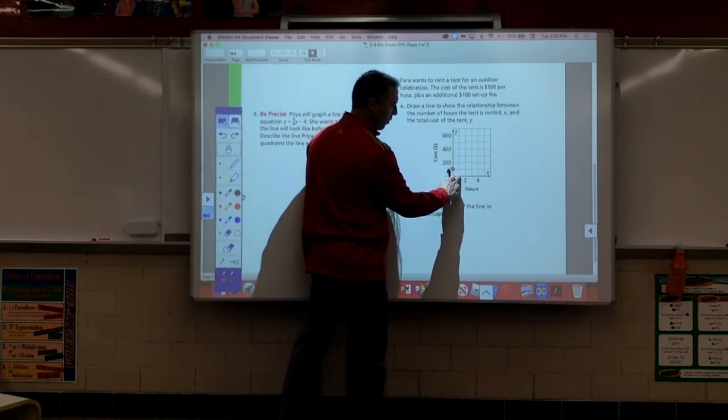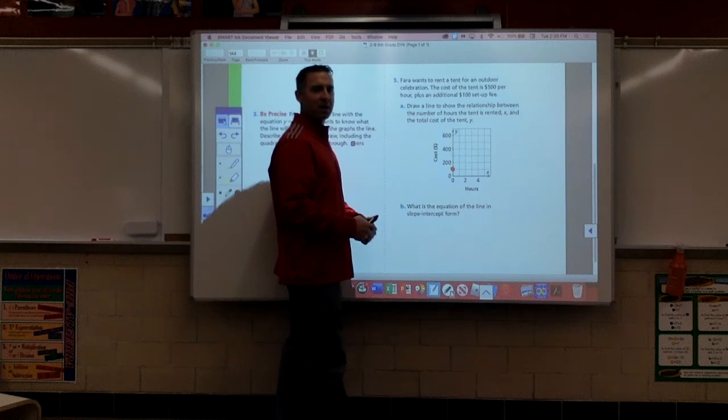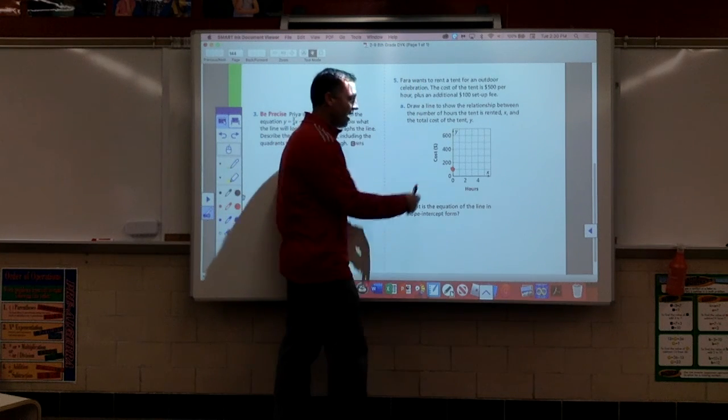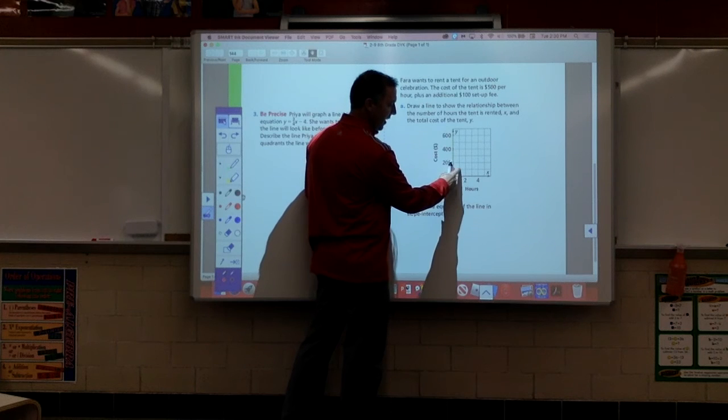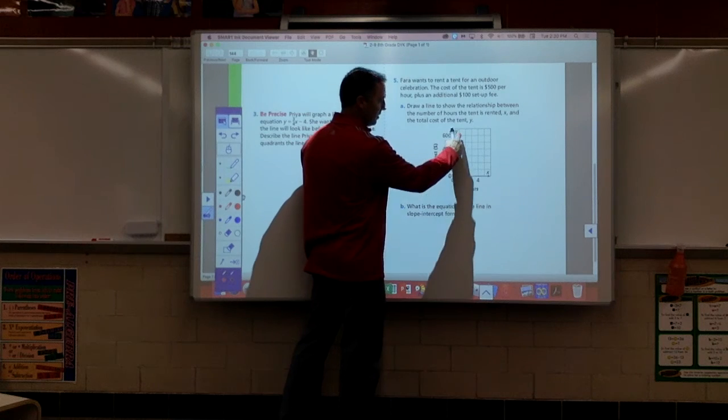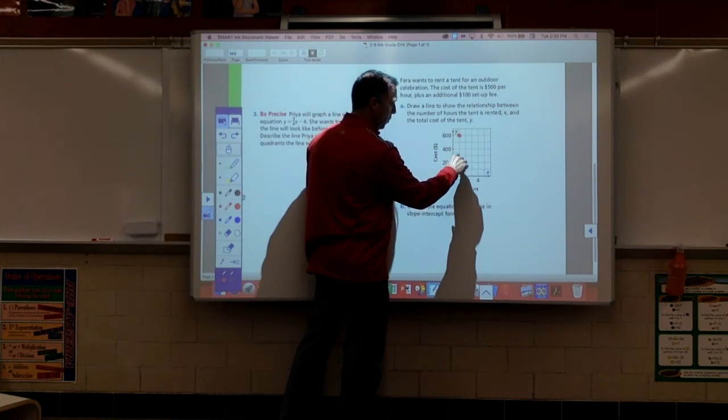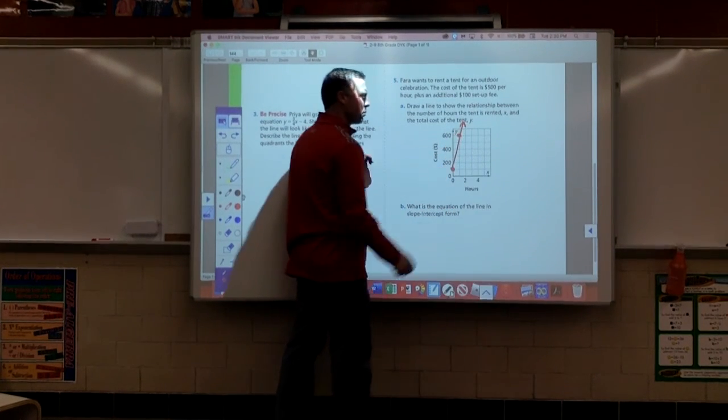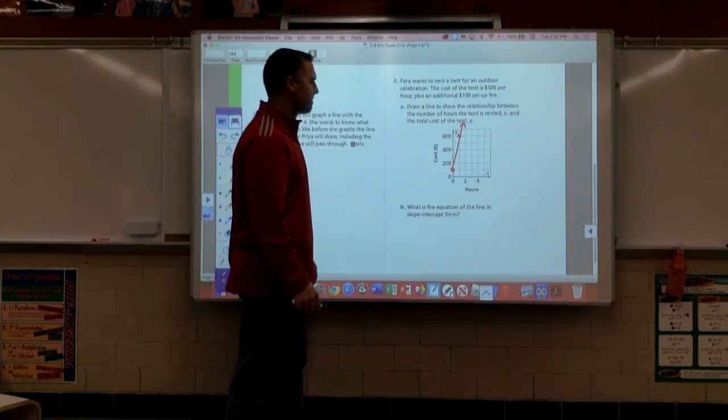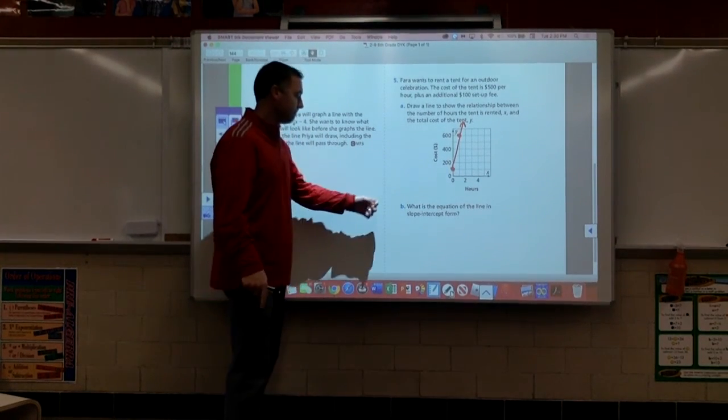Now, folks, as I go over one hour, how much does my cost increase? You got it. $500 more, people. So, if I go over one, I go up $500. That takes me up to $600. Damn. That's pretty steep. I wonder why that's so steep. Because the rate of change is a pretty big number, folks.